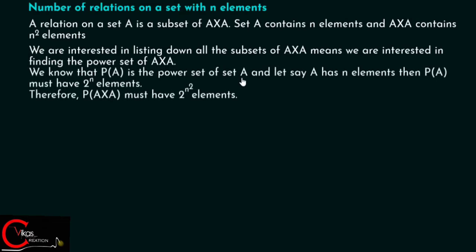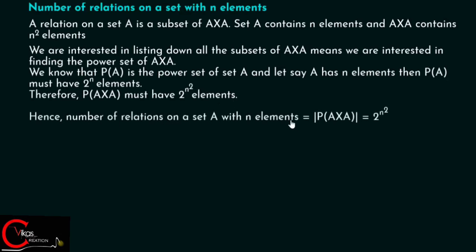We know that if A has n elements, then the power set P(A) has 2 to the power n elements. Therefore, P(A cross A) must have 2 to the power n squared elements, because there are n squared elements in A cross A. Hence, the number of relations on a set A with n elements is equal to 2 to the power n squared, which is the cardinality of the power set of A cross A. Number of subsets means number of relations.